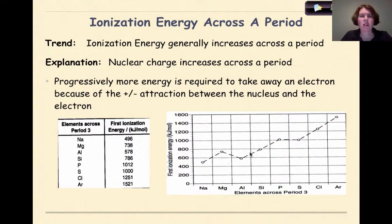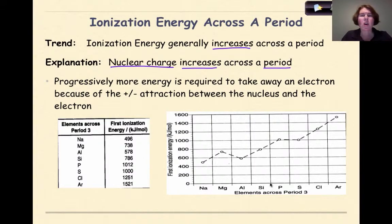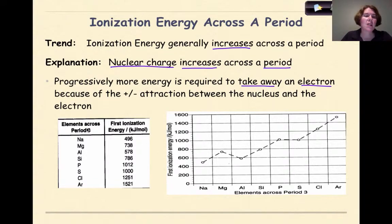Now let's look at ionization energy across the period. Ionization energy is generally going to increase across the period. The explanation is that the nuclear charge — the number of protons inside the nucleus — will increase across the period. As you go from sodium to magnesium to aluminum and so on, we're adding a proton inside the nucleus of each element. So progressively more energy is required to remove an electron because of the positive-negative attraction between the nucleus and the electrons in the outermost shell. Looking at the data for period 3, as we go from sodium to argon, the ionization energy values increase dramatically.